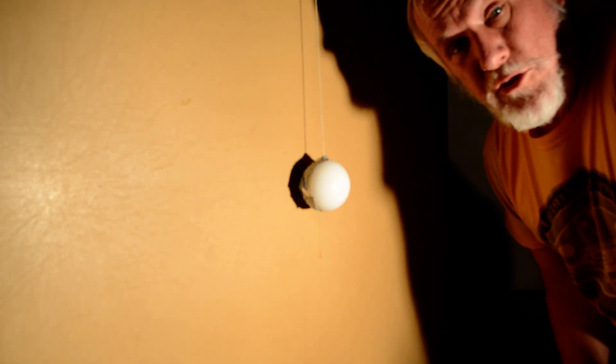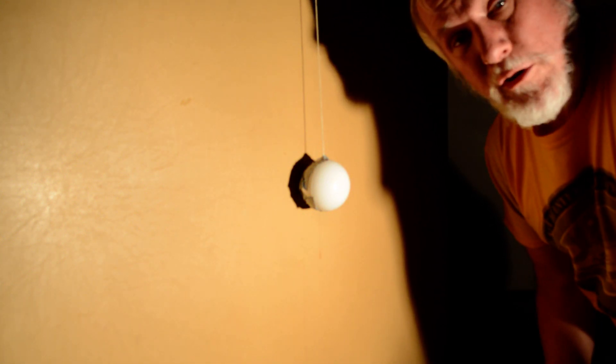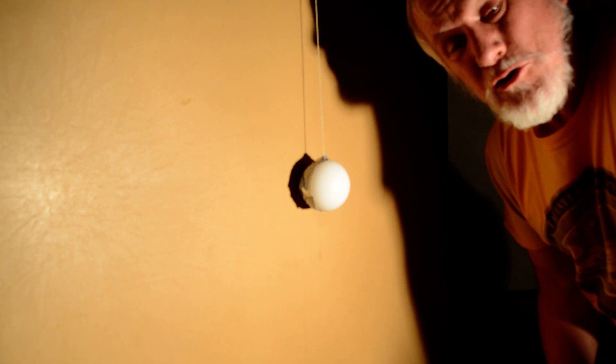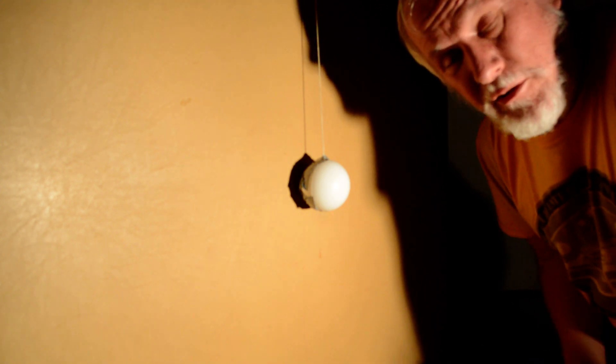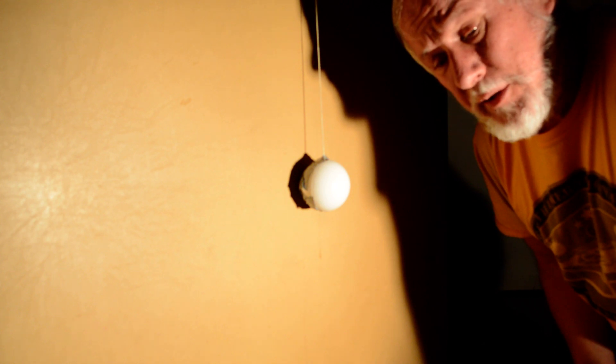Some flat earthers have given demonstrations where they cast a shadow of one ball onto another ball and they get shapes other than a circle when they do that, even getting a straight line under some cases.